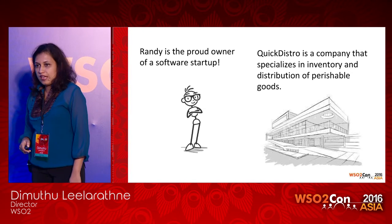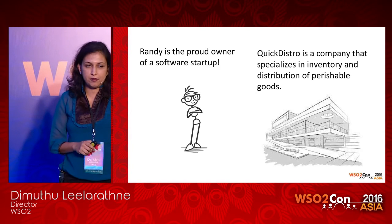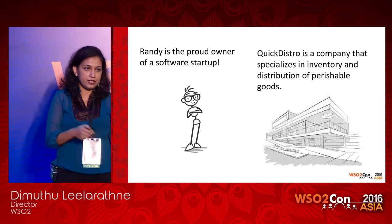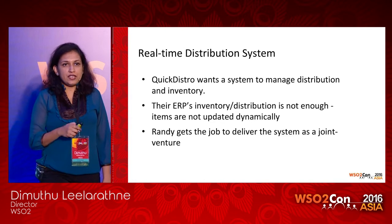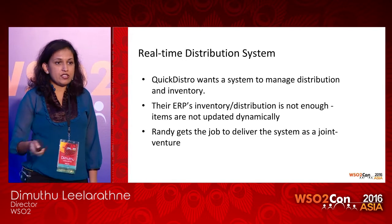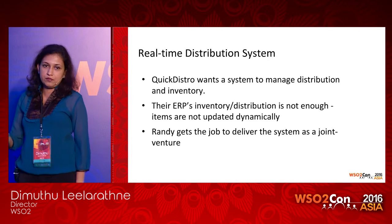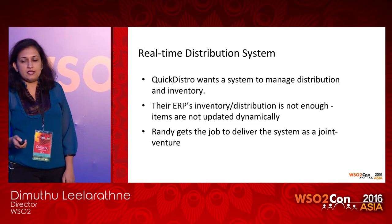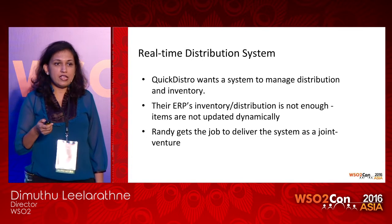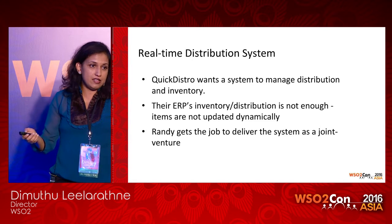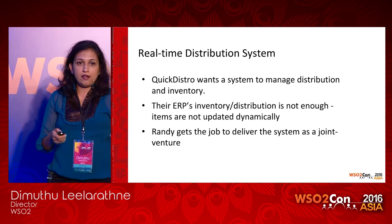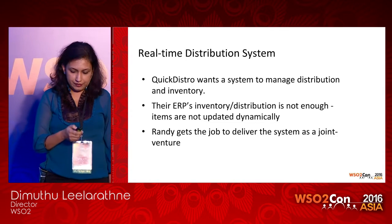Randy is an owner of a software start-up, and Quickstreet Distro is a distribution company for perishables. If you are a baker, you can bake without worrying about distributing it — Quick Distro will take care of it. Quick Distro wants a distribution management system along with inventory for their business. They have an ERP system they've been using, but since they deal in perishables, they want a system that updates stocks instantly. So they contact Randy, and they start a joint venture to create a real-time distribution management system.